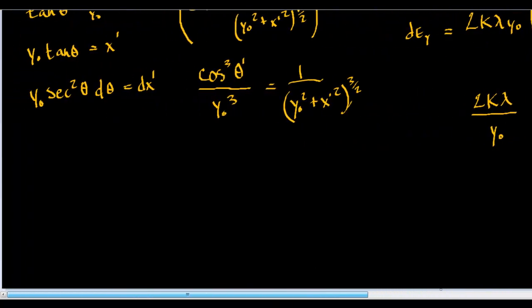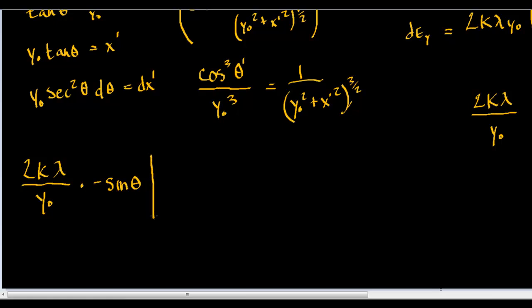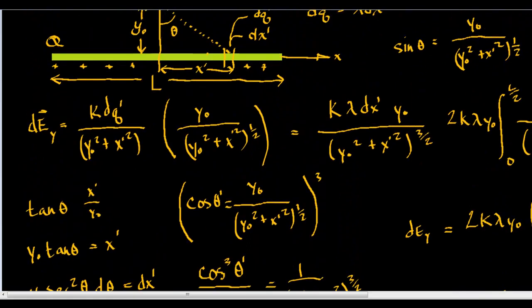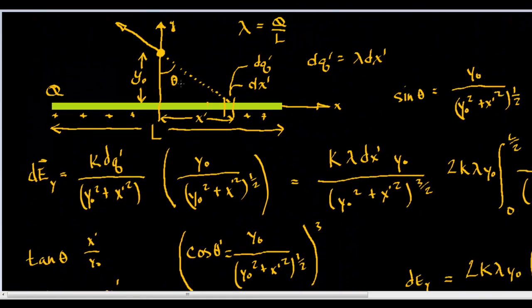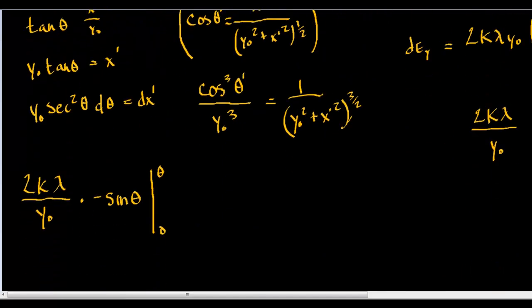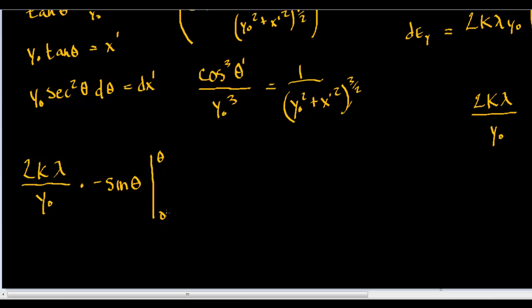So we have 2k lambda over y-naught times the integral of cosine theta d-theta. The integral of cosine is sine — or more precisely, the derivative of sine is cosine — giving us negative times negative sine theta, evaluated from 0 to theta-max.